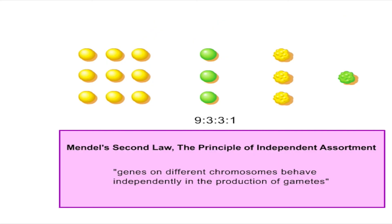The 9 to 3 to 3 to 1 phenotypic ratio is seen in dihybrid crosses when the two pairs of traits are inherited independently of one another in the production of gametes.